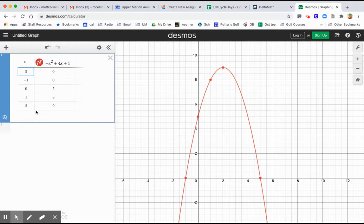2 comma 9 is right there. That's my vertex. And then there's just two other points right there. So basically, if I plot those five points into DeltaMath...